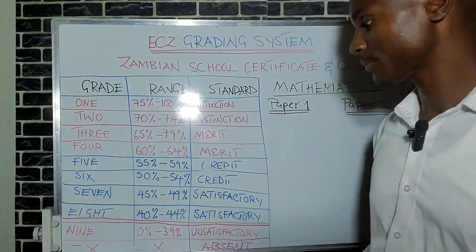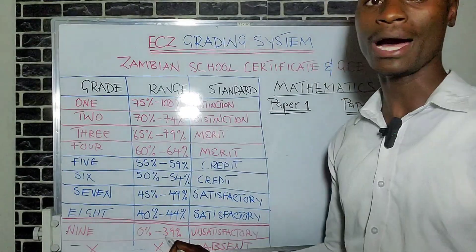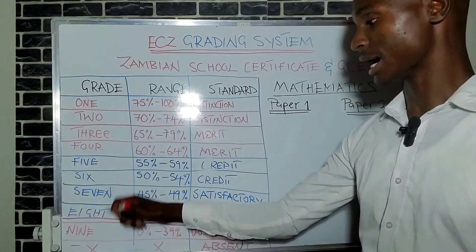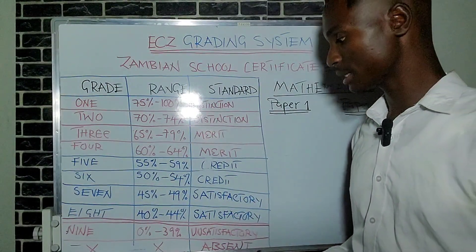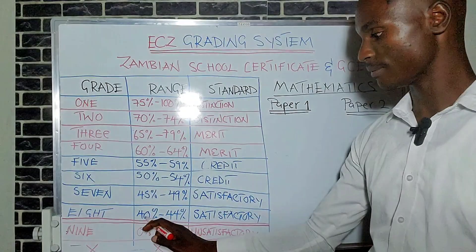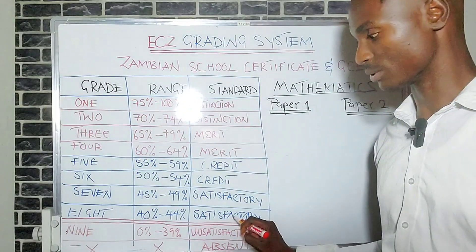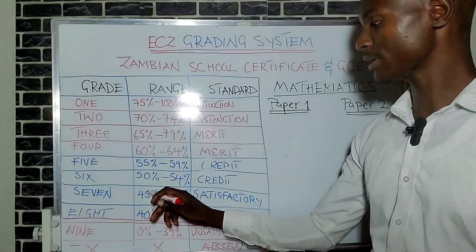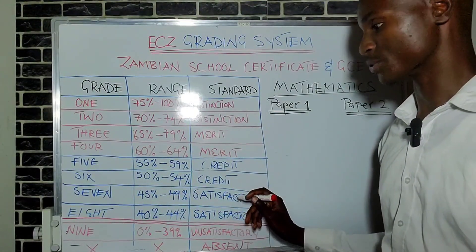Grade 9 is when you score between 0 and 39 percent — the standard is 'unsatisfactory.' Grade 8 is when you score between 40 and 44 — the standard is 'satisfactory.' Grade 7 is when you score between 45 and 49 — also 'satisfactory.'